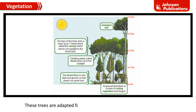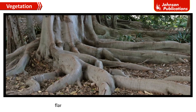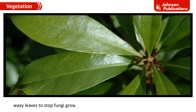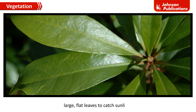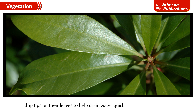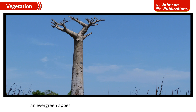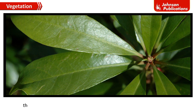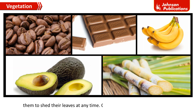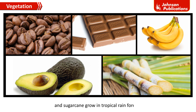These trees are adapted for living in the hot and wet climate. They have flared buttress roots to help hold them up, waxy leaves to stop fungi growing on them and reduce loss of water through transpiration, and large flat leaves to catch sunlight. They also have drip tips on their leaves to help drain water quickly when it rains heavily, branchless trunks to grow up quickly and fill gaps in the canopy, and an evergreen appearance as the continuous growing season allows them to shed leaves at any time. Coffee, chocolate, banana, avocado, and sugarcane also grow in tropical rainforests.